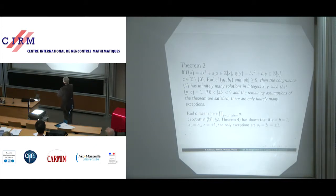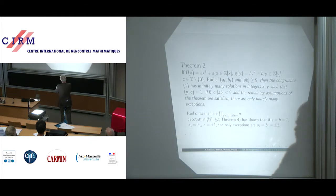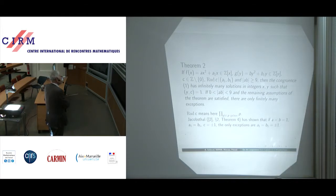And Jakobstall has shown that if A equals B equals 1 and A1 equals B1 and C equals plus or minus 1, the only exceptions are A1 equal to B1 equal to plus or minus 1.